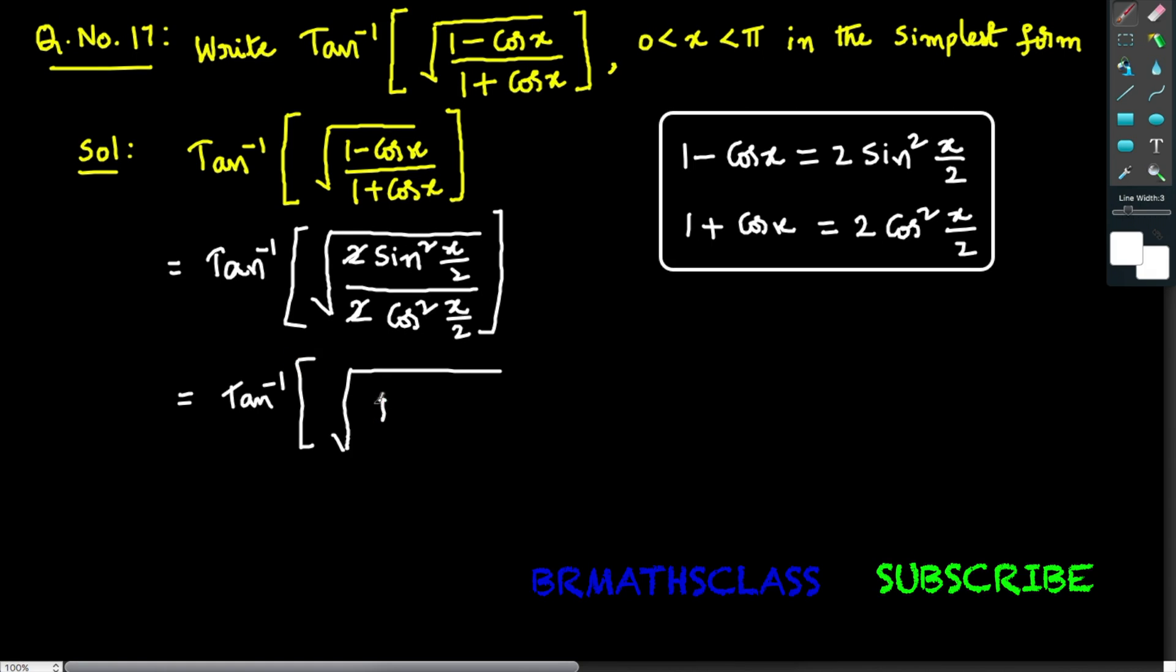Tan squared (x/2) can be written as [tan(x/2)] whole squared. Now you observe this: the square root and the square will get cancelled. What is the remaining expression?